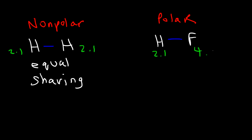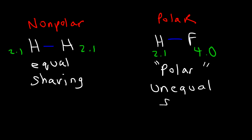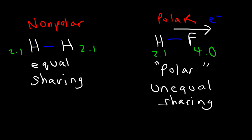Fluorine has an electronegativity of 4.0 and hydrogen is 2.1, so the difference is large. This gives us a polar covalent bond, because there is unequal sharing of electrons. Because fluorine is more electronegative than hydrogen, fluorine pulls the electrons toward itself, and so the electrons in HF spend more time closer to fluorine than to hydrogen.